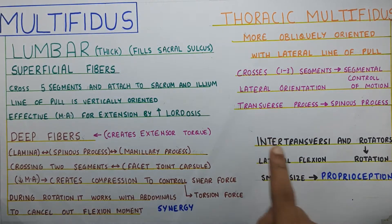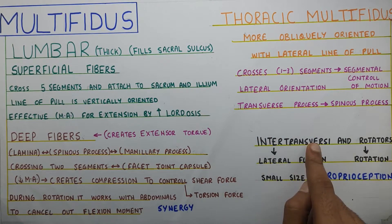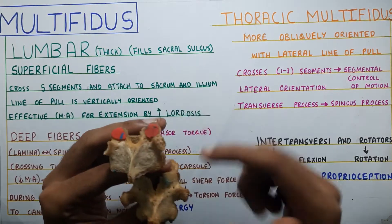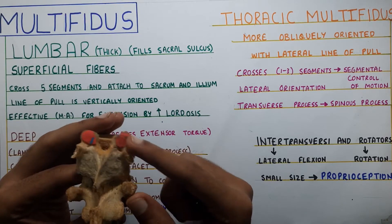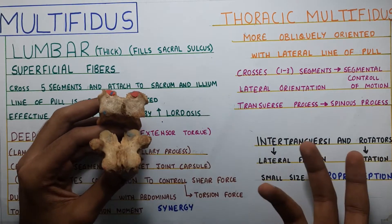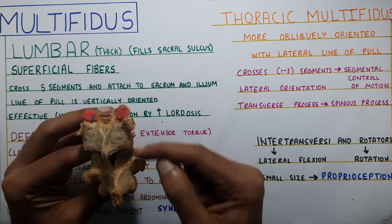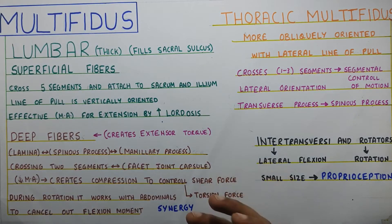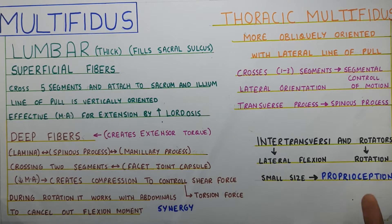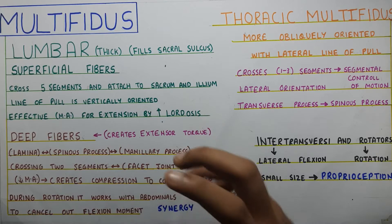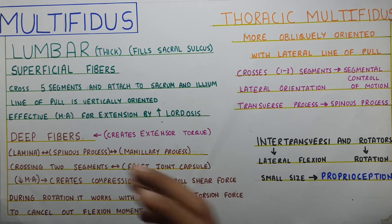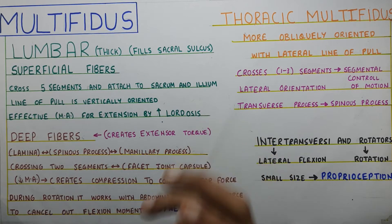The intertransverse muscles, as their name says, connect from one transverse process to another. Because they are positioned laterally, they cause lateral flexion. The rotators cause rotation. But these muscles are very small in size, and because of their small cross-sectional area, their main function — as we have seen in other regions of the spine — is proprioceptive. This proprioceptive function helps them sense the placement of one vertebra over the other, and they can go into protective spasm whenever needed to protect your spine against harmful movements.